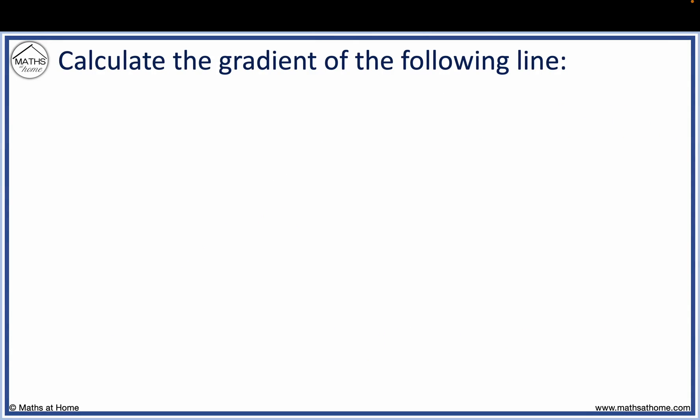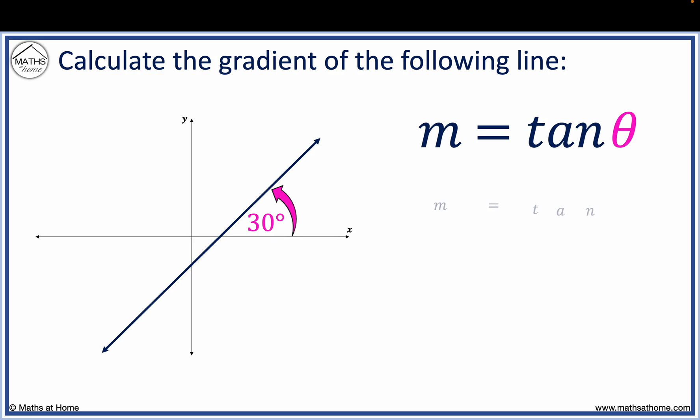For example, calculate the gradient of the following line. We use the equation m equals tan theta. Theta is the angle 30 degrees. We simply calculate tan 30 on the calculator to obtain 1 over square root 3.